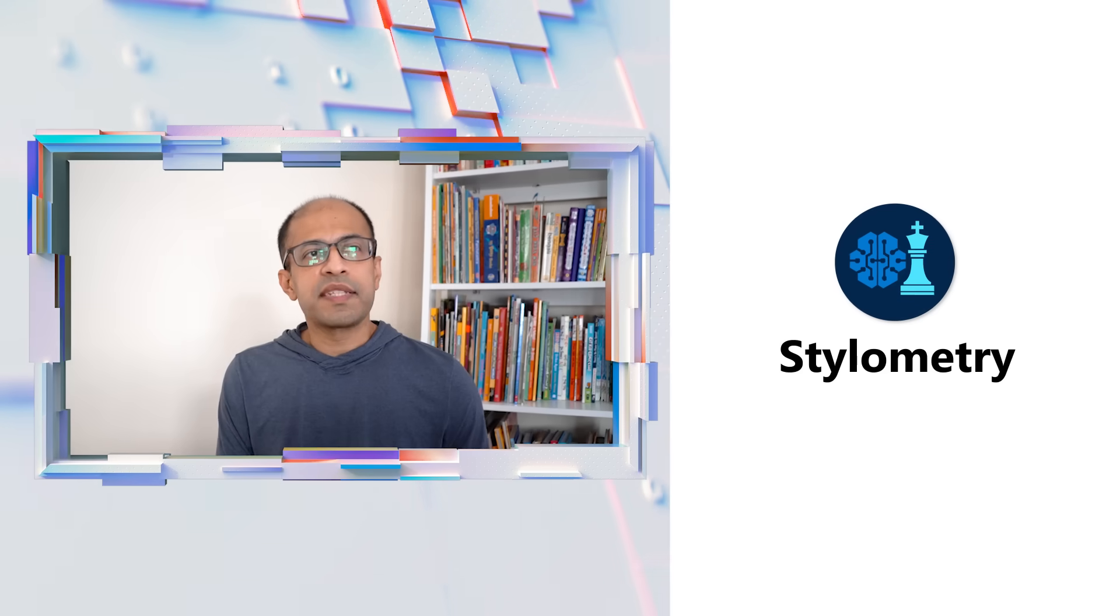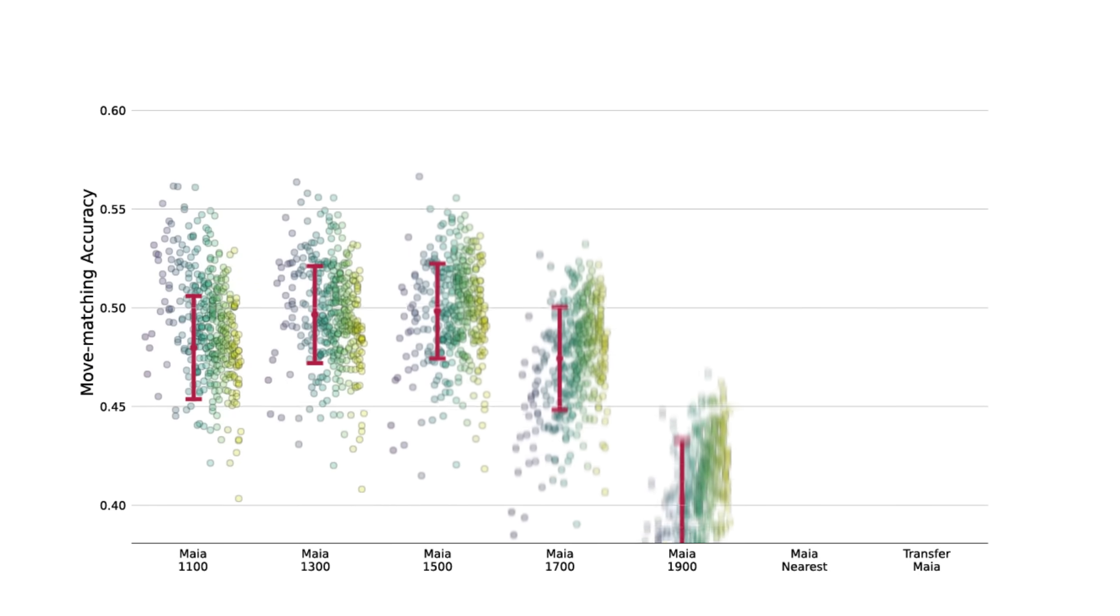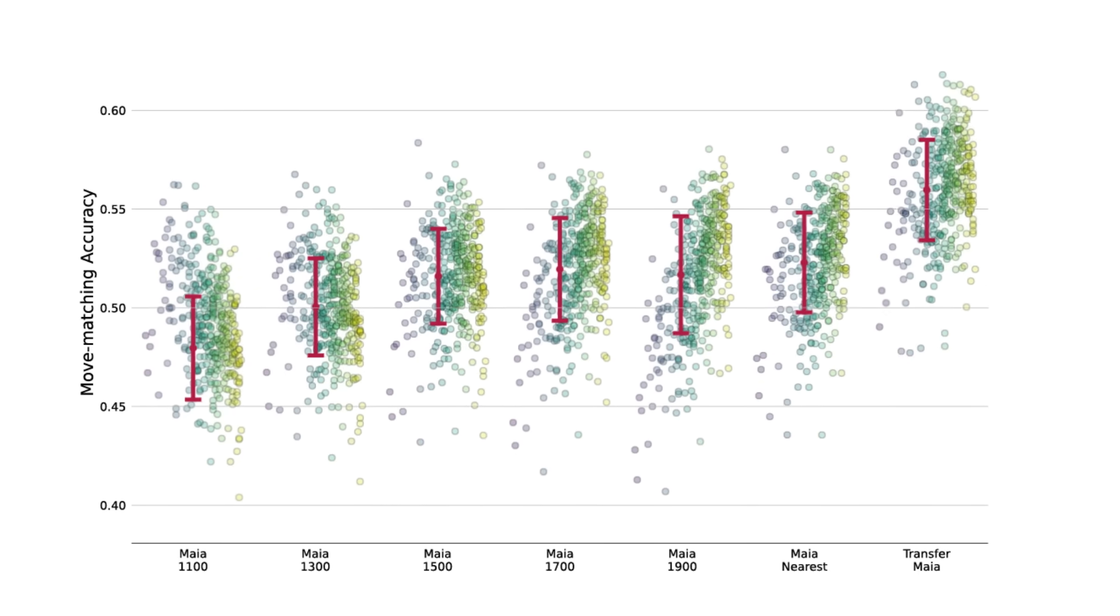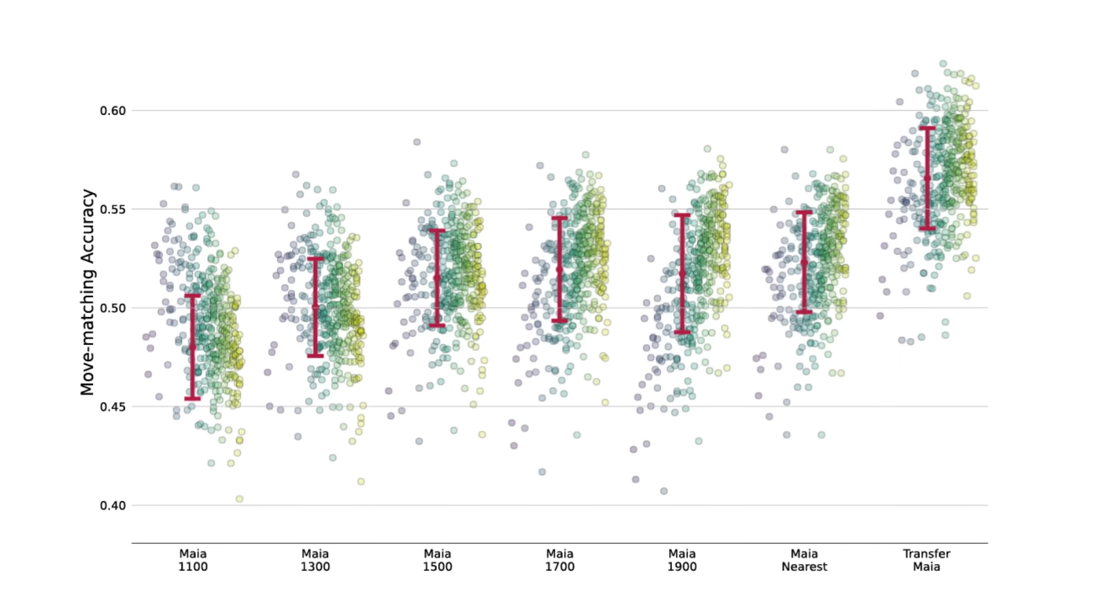So this is a task we call stylometry. It's basically like trying to find the style of a player. Can you identify a player based on their style? So in this way, we can do stylometry but for chess players. And so this is something that I'm particularly excited about because it means that it's taken our ability to match and learn human decisions from a skill level bucket down to an individual level.